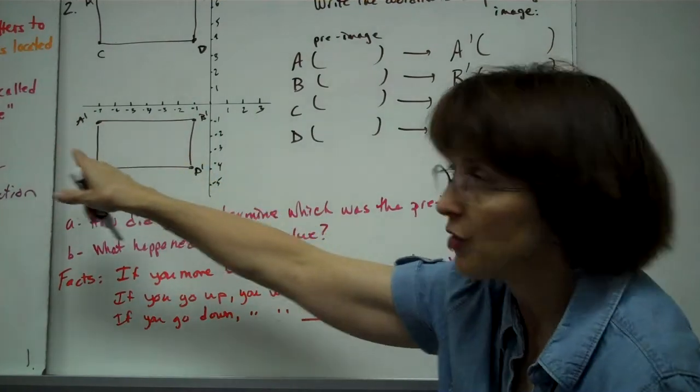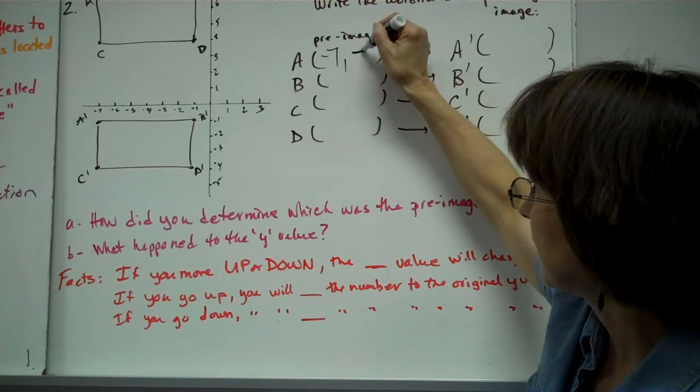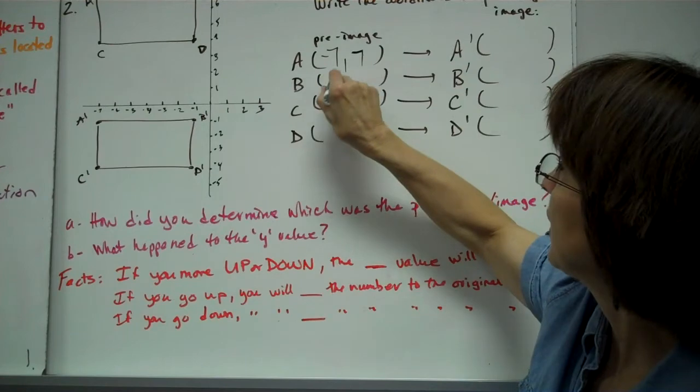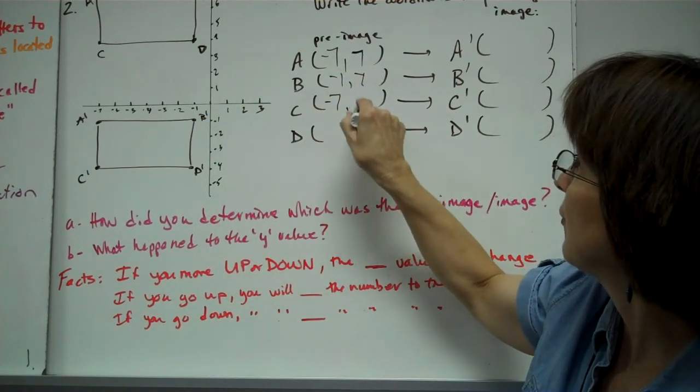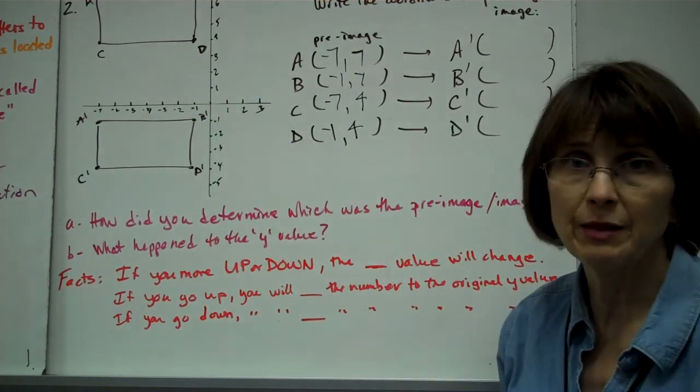We're going to go ahead and label these. A is (-7,7), B is (-1,7), C is (-7,4), and D is (-1,4). That's my preimage.